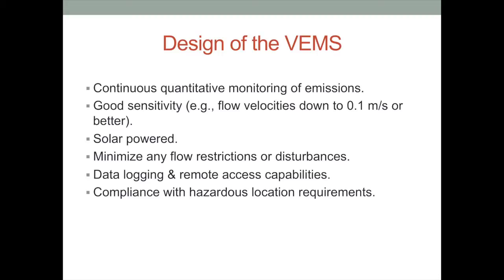The underground tank panel is being powered using a solar panel, while the above-ground tank will use actual site power. We've used clamp-on ultrasonic flow meters on the underground tank, and on the above-ground tank we're going to use a flow cell similar to the ones used for casing gas venting. By wetting the transmitters to the flow, we get better signal response from those transmitters. So we're doing that on the current tank.